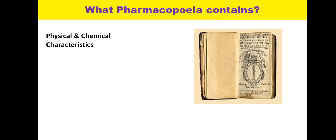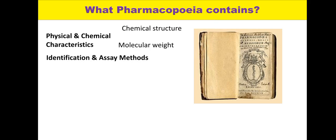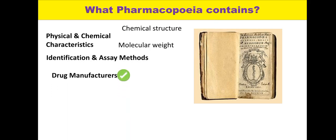The pharmacopoeia contains the physical and chemical characteristics — the chemical structure and molecular weight of the product — along with various measures and guidelines for identification and analytical chemistry methods. All of this is required for the purpose of drug manufacturing. So it is required for the manufacturer and for regulatory bodies to approve the drug, but it has nothing to do with prescribers or doctors.